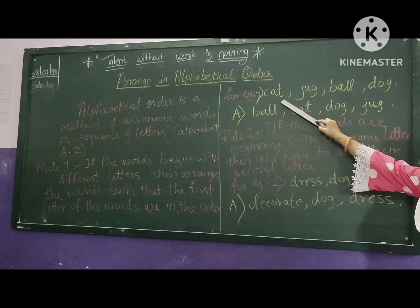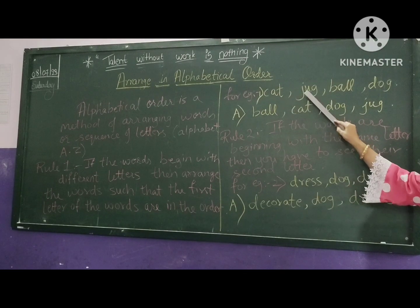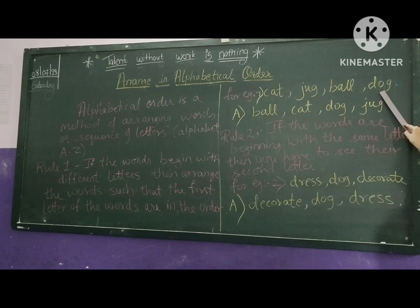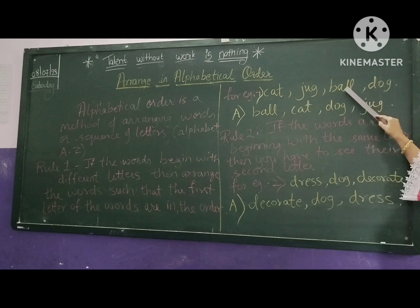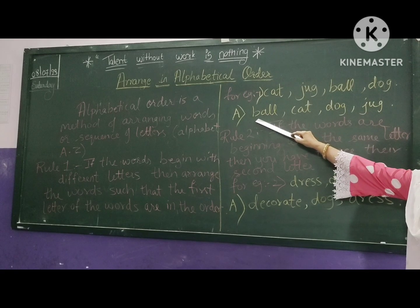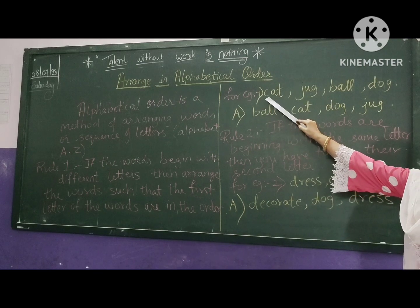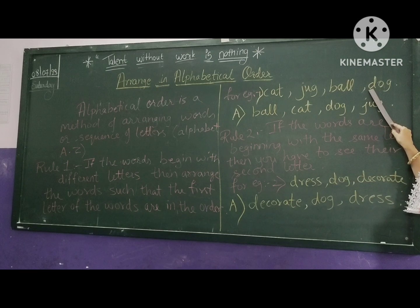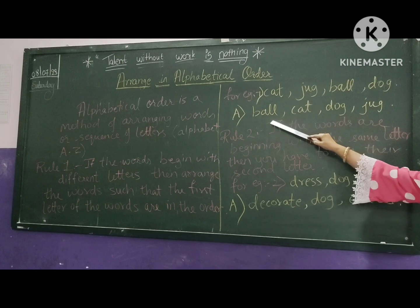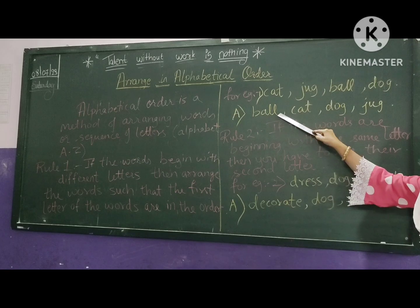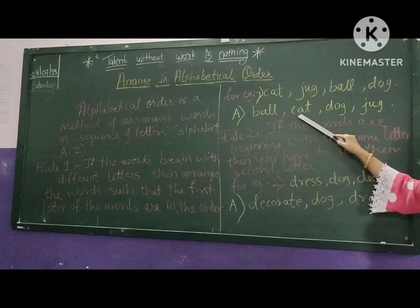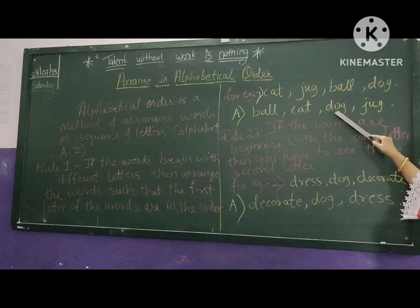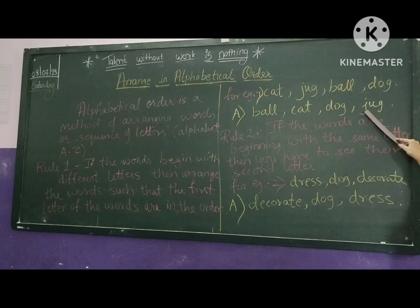Look at the first letter of each word: C, J, B, D. In the English alphabet, which letter comes first? That is B. So first we write Ball. Then Cat — C. Then Dog — D. Then Jug — J, at the last. So the alphabetical order is: Ball, Cat, Dog, Jug.